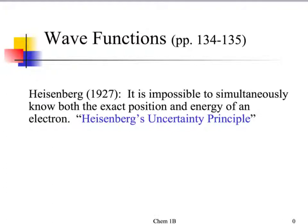We're looking at electrons in those clouds because we really don't know where electrons lie. There's this guy named Heisenberg — and if you watch Breaking Bad, Walt White's character name is Heisenberg. He named himself after this guy, who said it's impossible to simultaneously know both the exact position and energy of an electron. This is his Uncertainty Principle — it's uncertain where electrons lie.